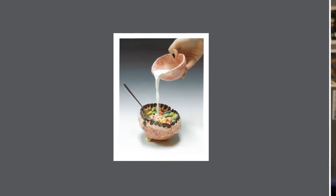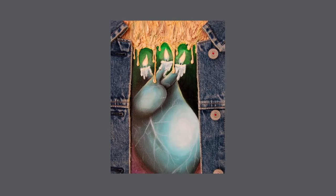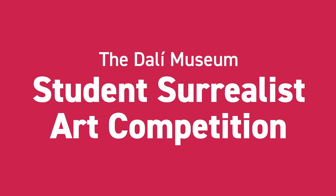One, come up with a big idea. Two, create it — paint it, draw it. Use mixed media, photography, or digital art. Try combining found objects to see what interesting combinations can occur. Watercolors, or just about any medium that you want. And three — this is the most important part — enter the Dali Museum Student Surrealist Art Competition.